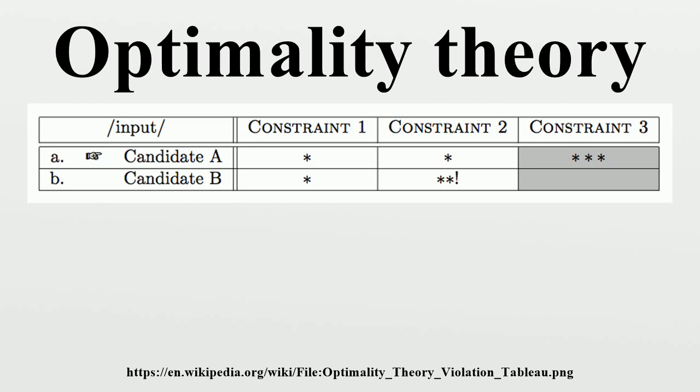Optimality theory assumes that these components are universal. Differences in grammars reflect different rankings of the universal constraint set, CON. Part of language acquisition can then be described as the process of adjusting the ranking of these constraints.